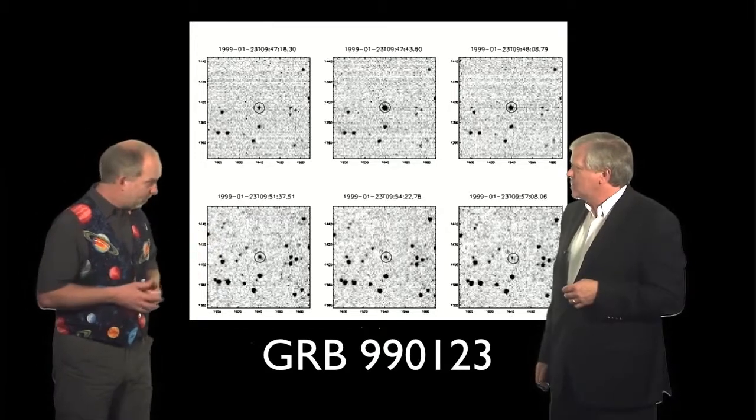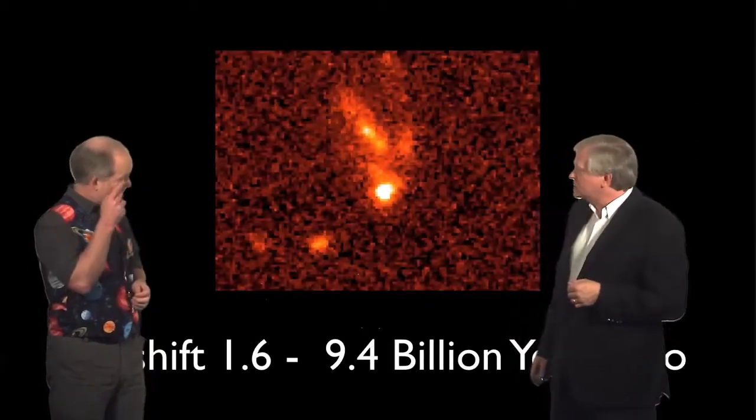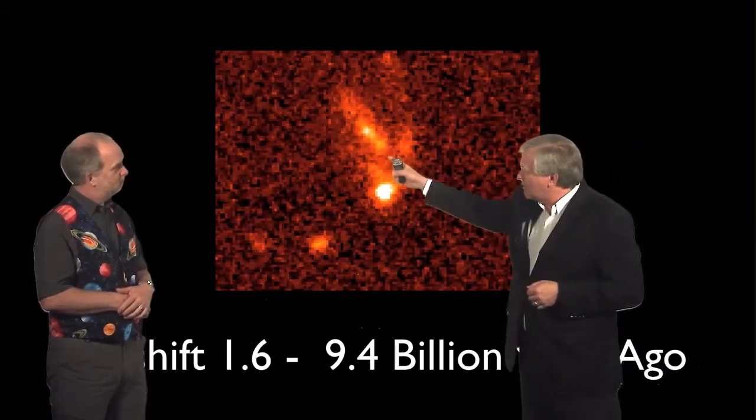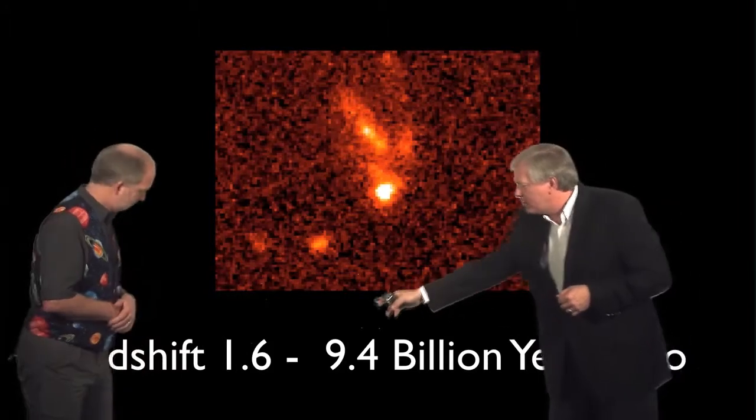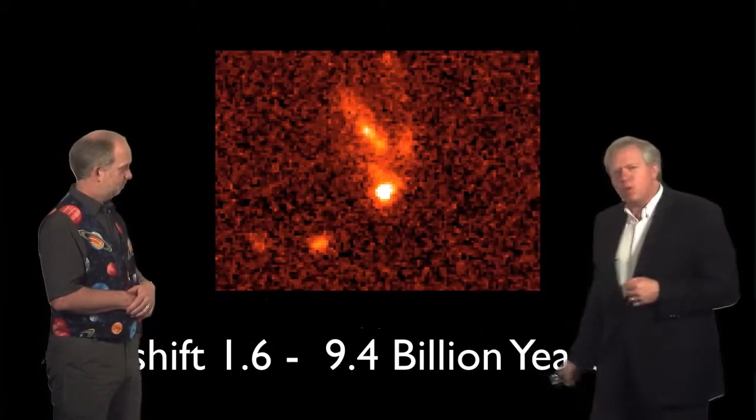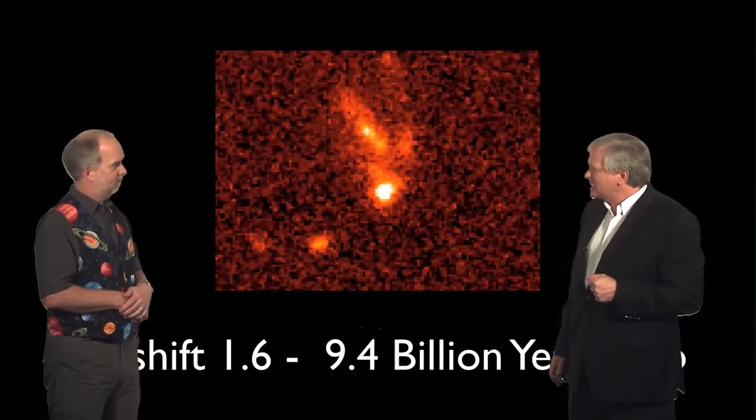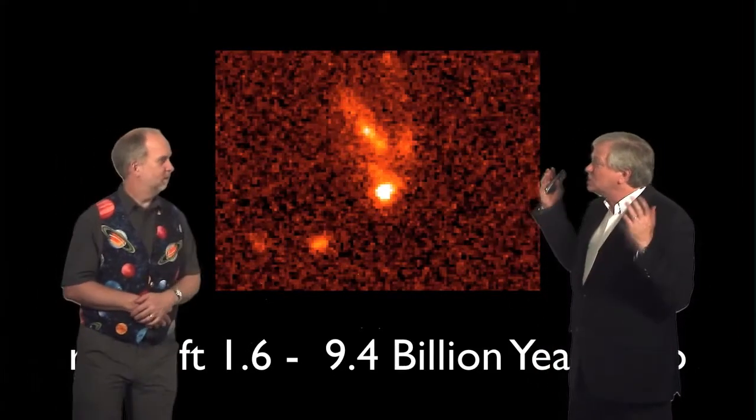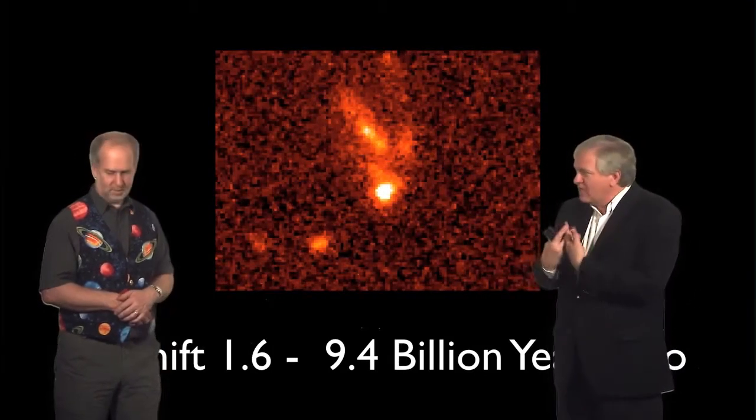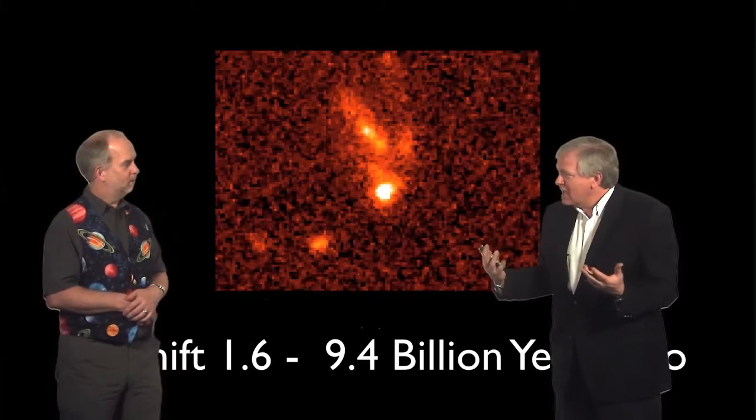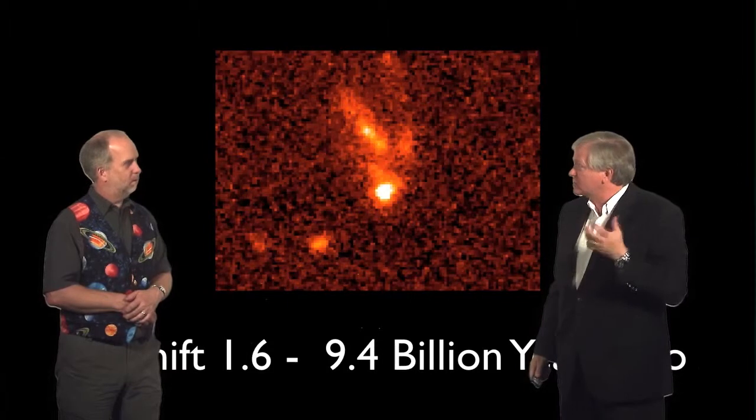Was it another nearby one? Well, you might think so, but it turned out when we looked at it in detail, it was in a tiny galaxy halfway across the edge of the universe at a redshift of 1.6. That's 9.4 billion years ago. So this thing was amazingly luminous. It was as bright as a very nearby star. And yet it was two-thirds of the way to the edge of the universe, to the time of the Big Bang.